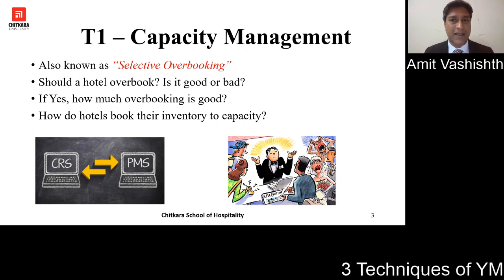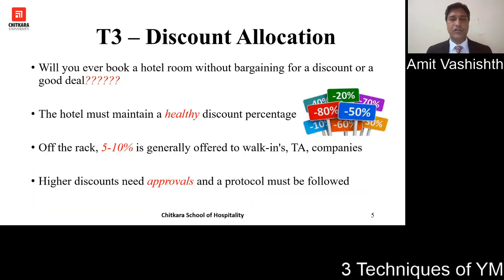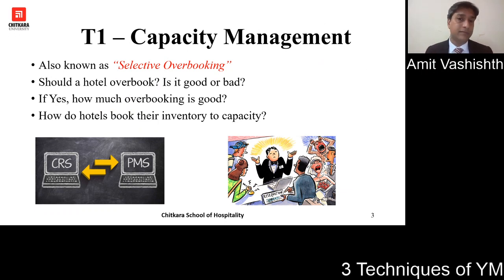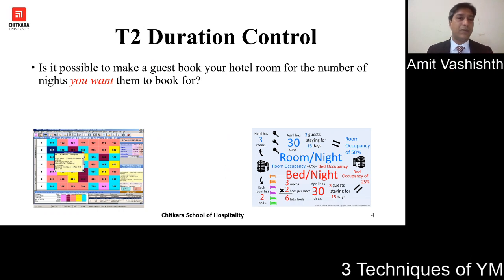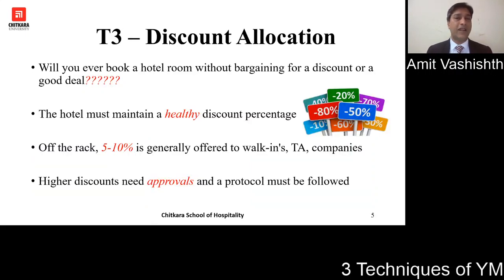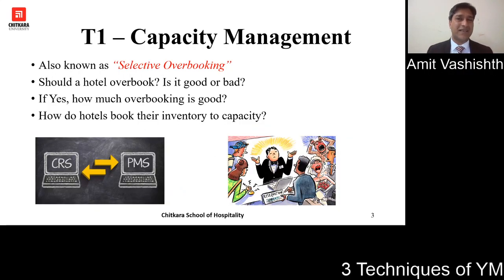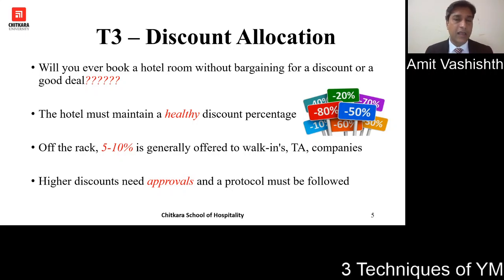To recap the three techniques: capacity management involves selective overbooking with mathematical calculations so you don't lose reservations and can attain maximum revenues. Duration control means limiting the number of nights a guest books your hotel. And discount allocation means maintaining a very healthy discount percentage for your hotel. All three aspects have been discussed in detail by Akruti ma'am in your classes, and you have notes for reference.